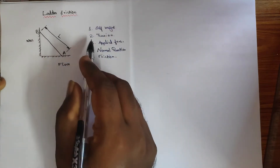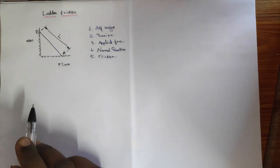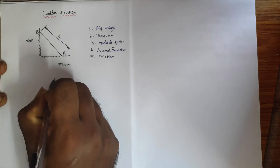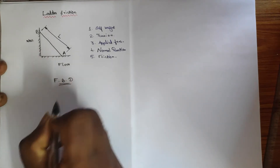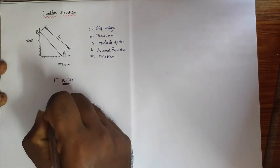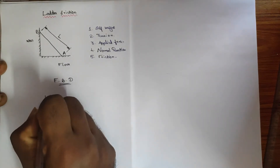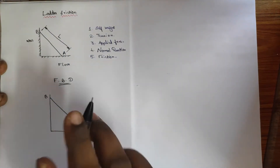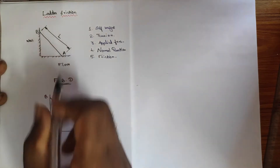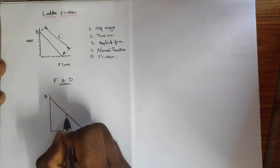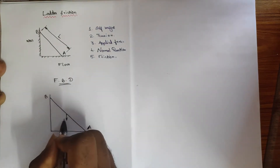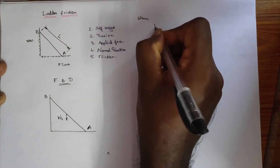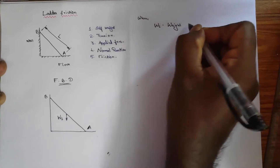Let us apply these forces to the ladder arrangement. In the free body diagram, this is the ladder with end A and end B. The self-weight of the object always acts at the mid or center of the object. So at the mid of the ladder, the weight acts — this is the weight of the ladder, denoted as WL.